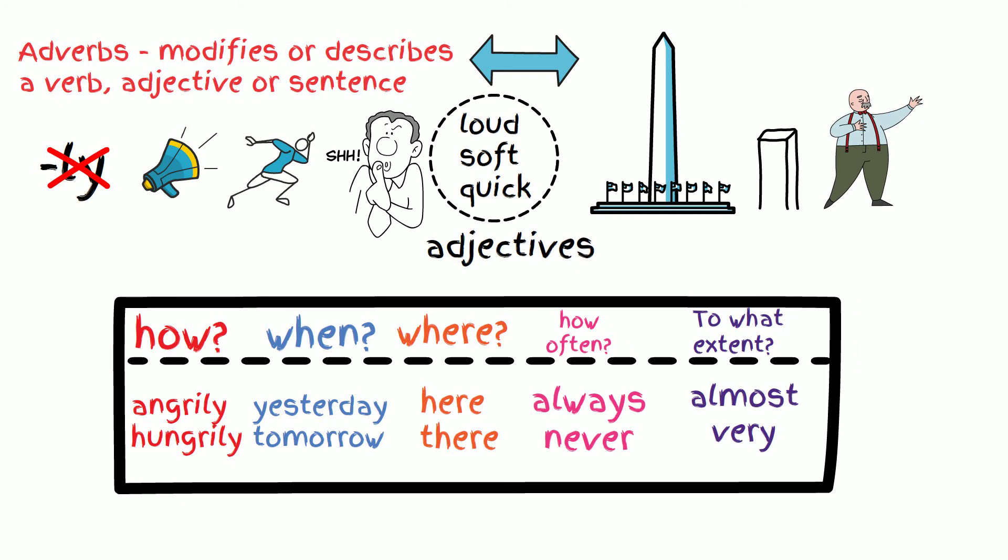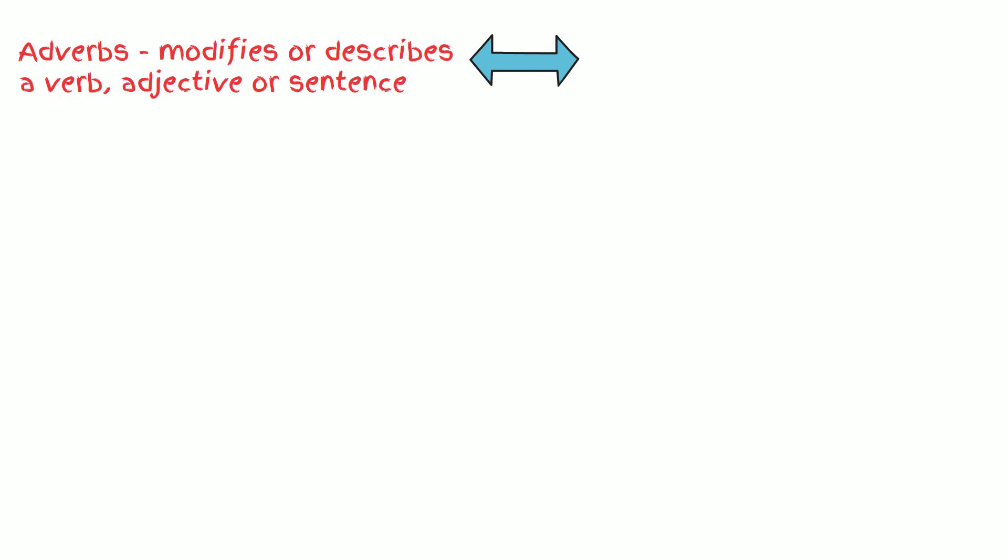Some examples of words that are not adverbs, but have L-Y endings are multiply, apply, reply, lovely, ugly, family, jelly, and more. I want you to focus on the meaning of adverbs to help you determine what the adverbs are in our practice session coming up. Remember that adverbs describe or modifies a verb or adjective or sentence. Pause the video and try to come up with the answers beforehand.